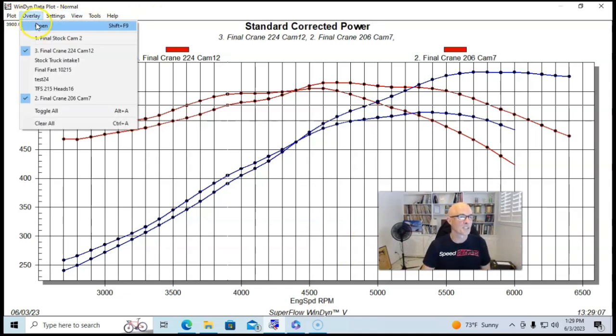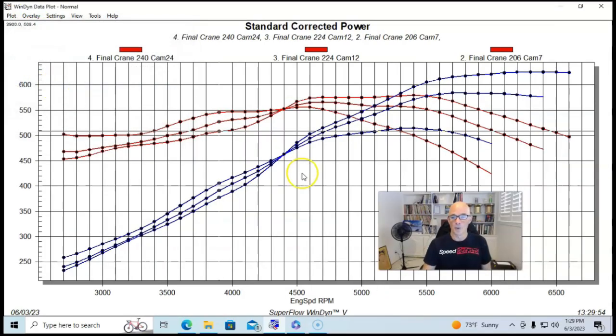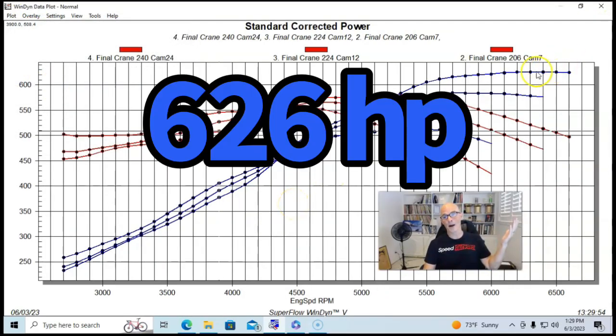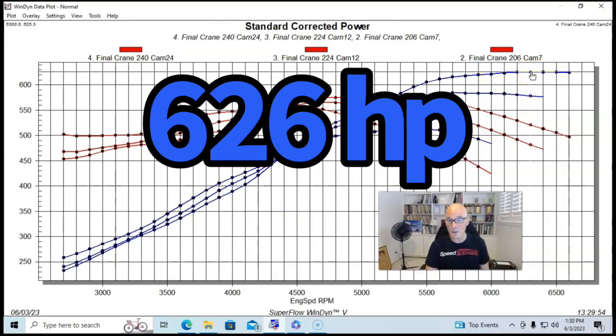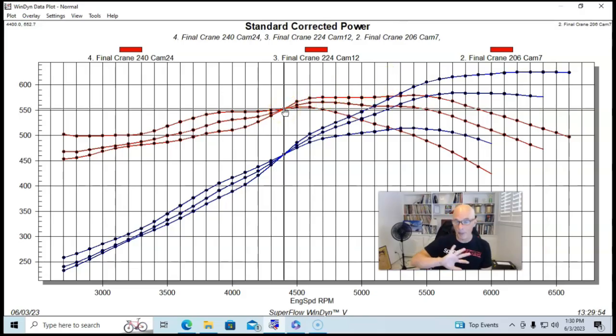We stepped up in camshaft even further to a 240 degree duration cam. And you can see we made a lot more power. Peak power is all the way up to 625 horsepower. In fact, it made more power than the 224 cam, all kind of crossing over at the same point, all of this 4400 RPM range and above, the bigger cam was definitely the way to go. In fact, I'd put the bigger cam in. If I wanted power above the 4400, 4500 RPM range, I wouldn't pick the 224 cam.